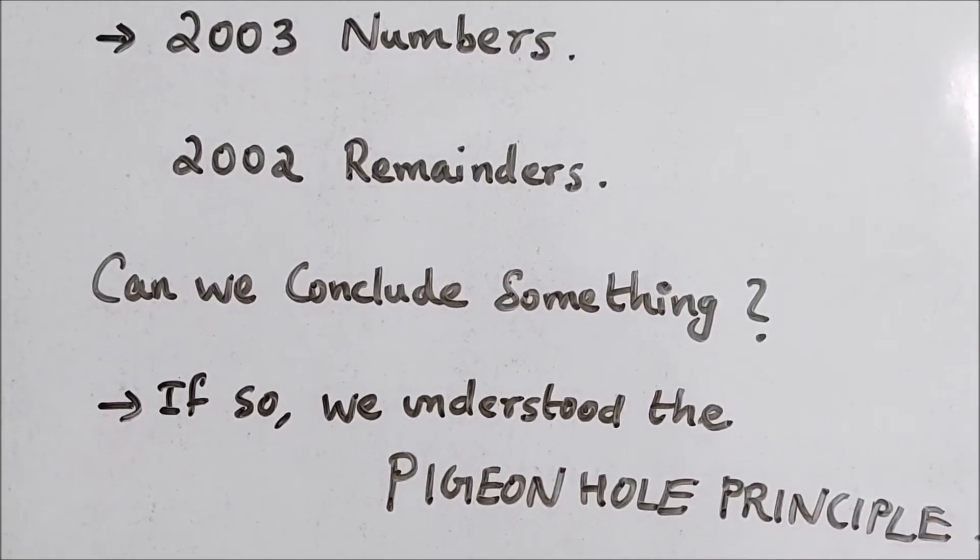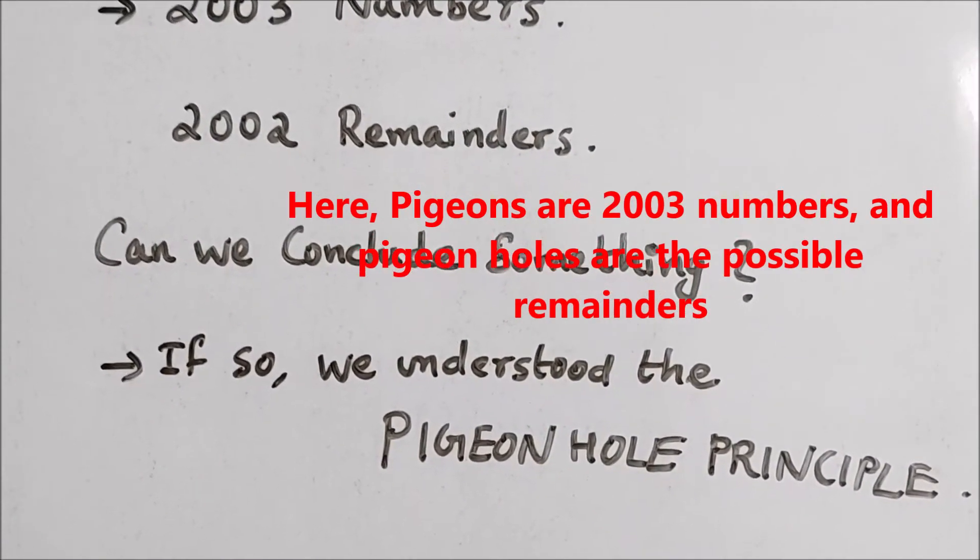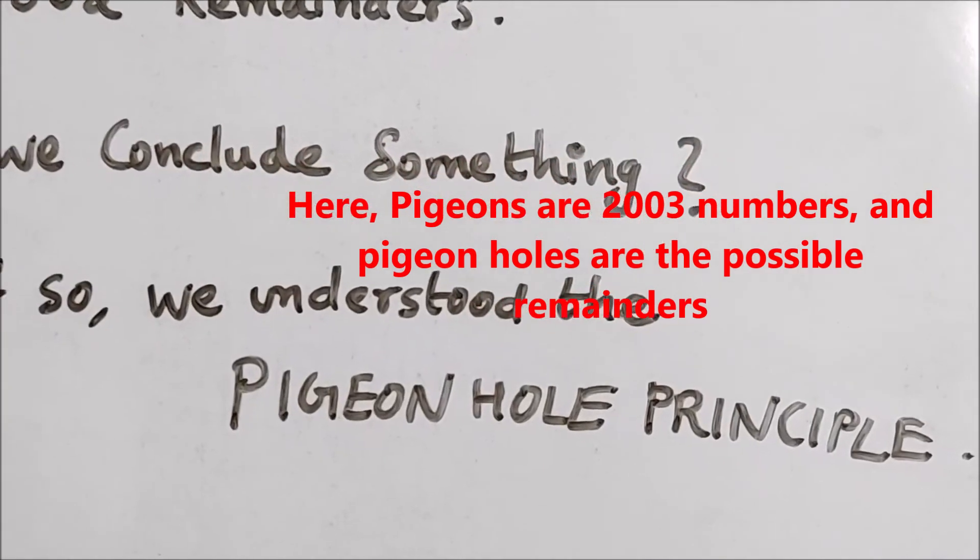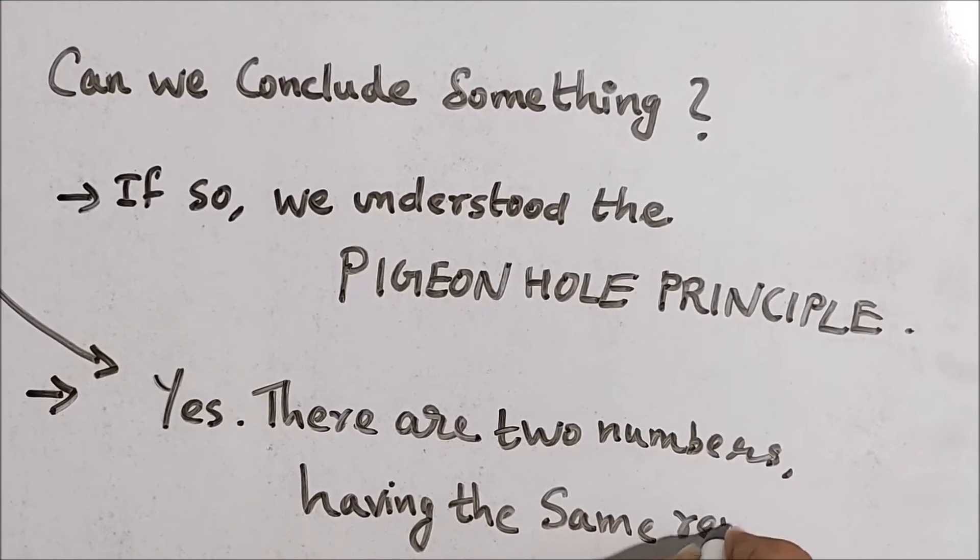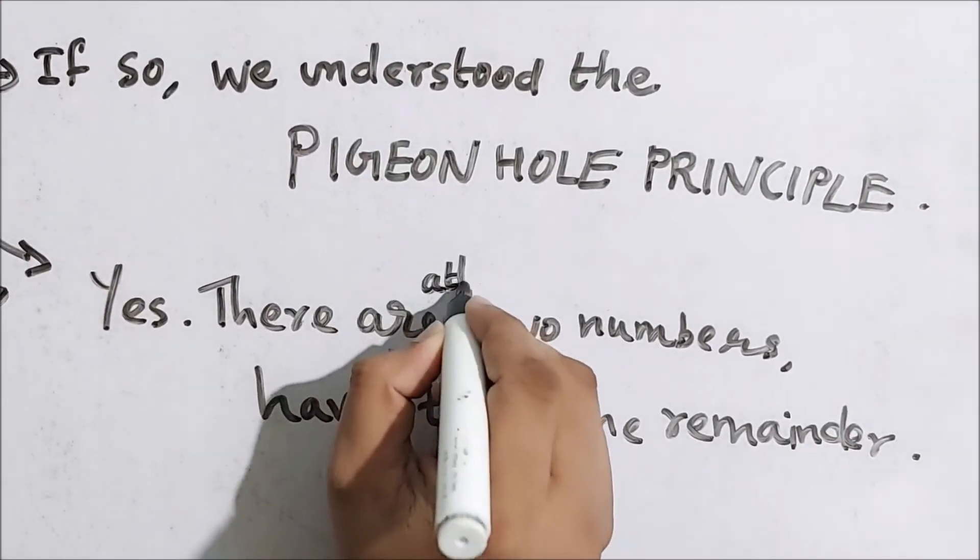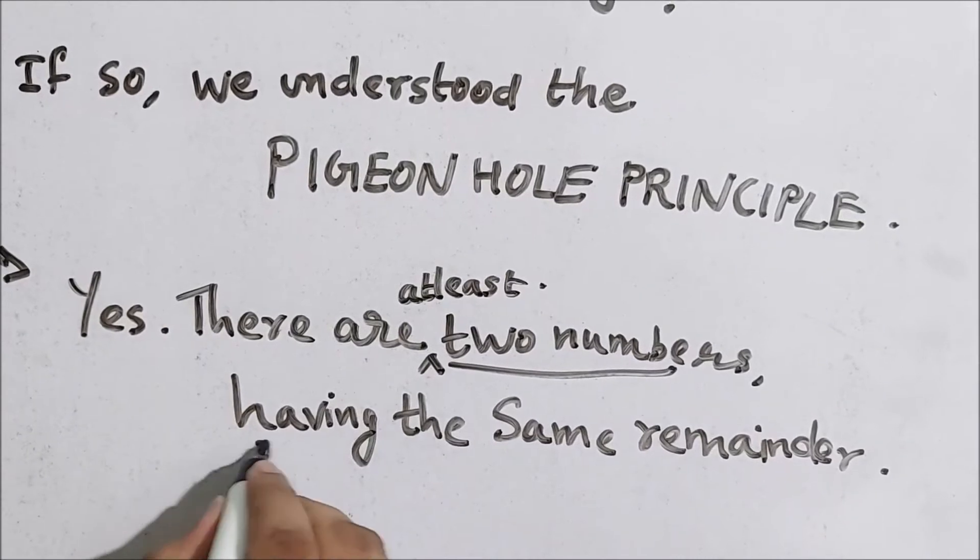So applying the pigeonhole principle here, what we get is that when we have 2003 numbers and 2002 possible remainders, we get that there are two numbers having the same remainder. Actually, there are at least two numbers having the same remainder.